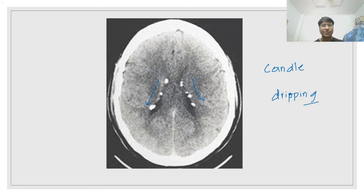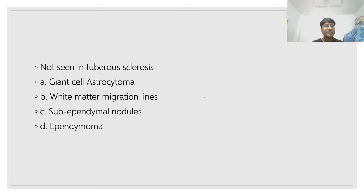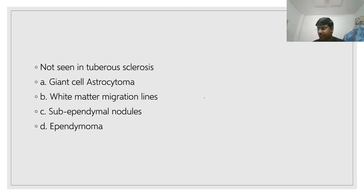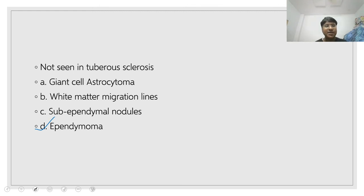MCQ: Which of the following is not seen in tuberous sclerosis? Options include giant cell astrocytoma, white matter migration lines, sub-ependymal nodules, and ependymoma. The answer is ependymoma — you will not see ependymoma in tuberous sclerosis.